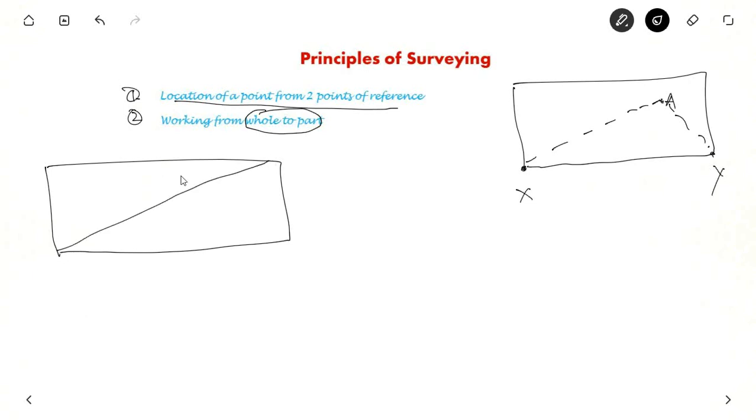You will try to divide this area into various triangles and then keep on surveying. Suppose you want to determine this position. You will always try to go from whole to part. From X, you will determine this position. And from here, you will determine this position. Let it be B.